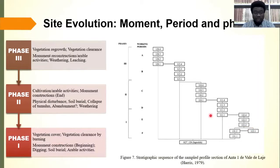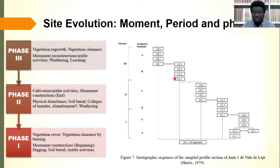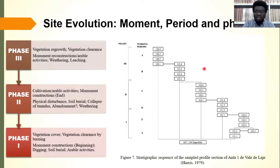There was stratigraphic continuity from Phase 1 to Phase 2, with continuation of arable activities. The construction of the monument ended in Phase 2, where features of physical disturbance, soil burial, and collapse of the monument were evident. One striking finding was the collapse of the monument, which necessitated abandonment — evidenced by stratigraphic discontinuity. A fundamental question remains: was it the collapse that led to abandonment, or abandonment that led to collapse? This is a question for future research.